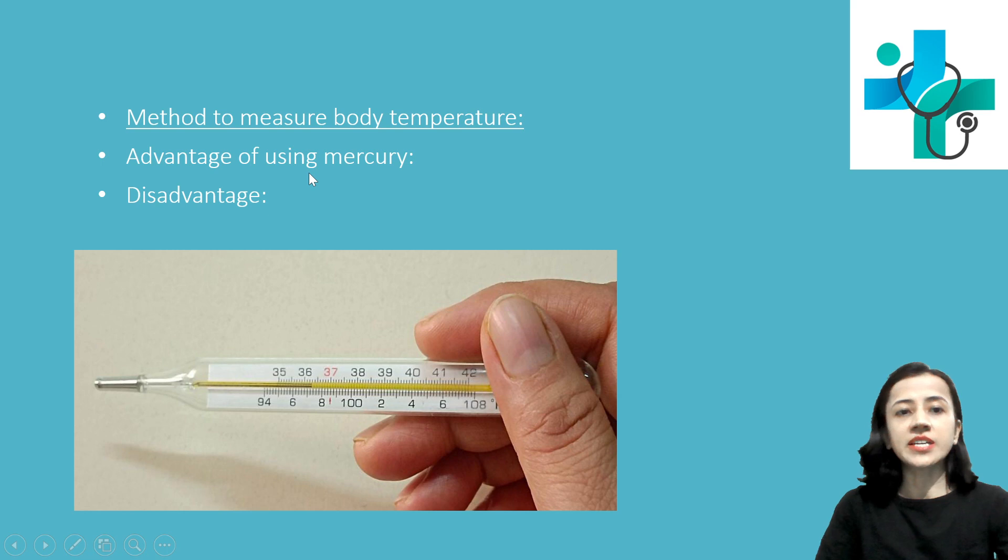Now what are the advantages of using mercury? One advantage is that mercury is a liquid metal so it can expand easily. Second thing, it will not stick to the glass. So it can be easily expanded and it will not stick, you will get the exact reading.